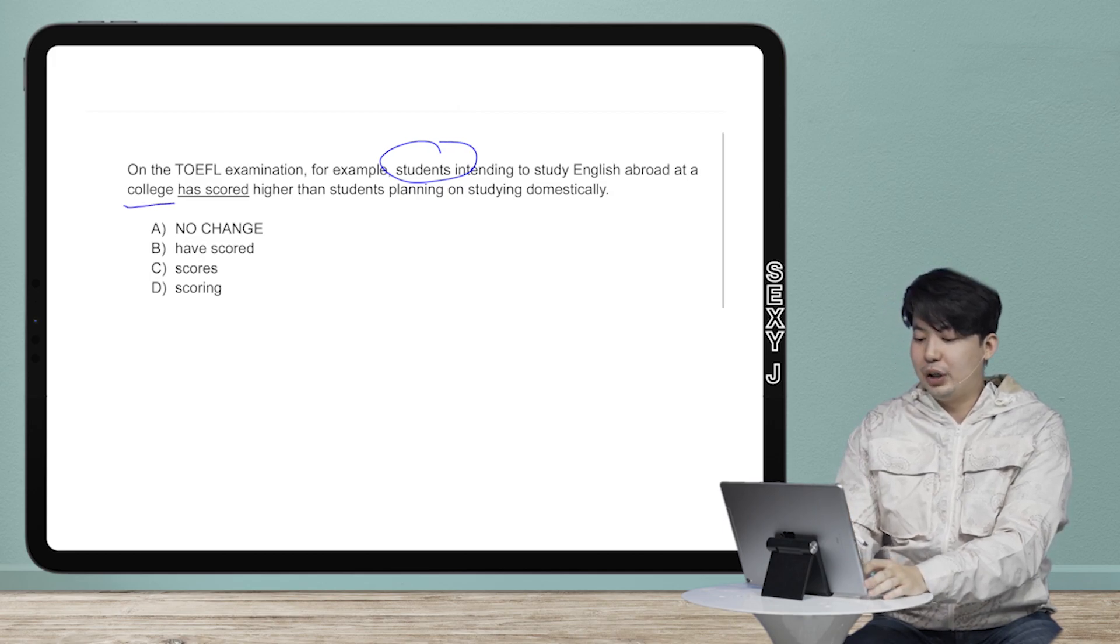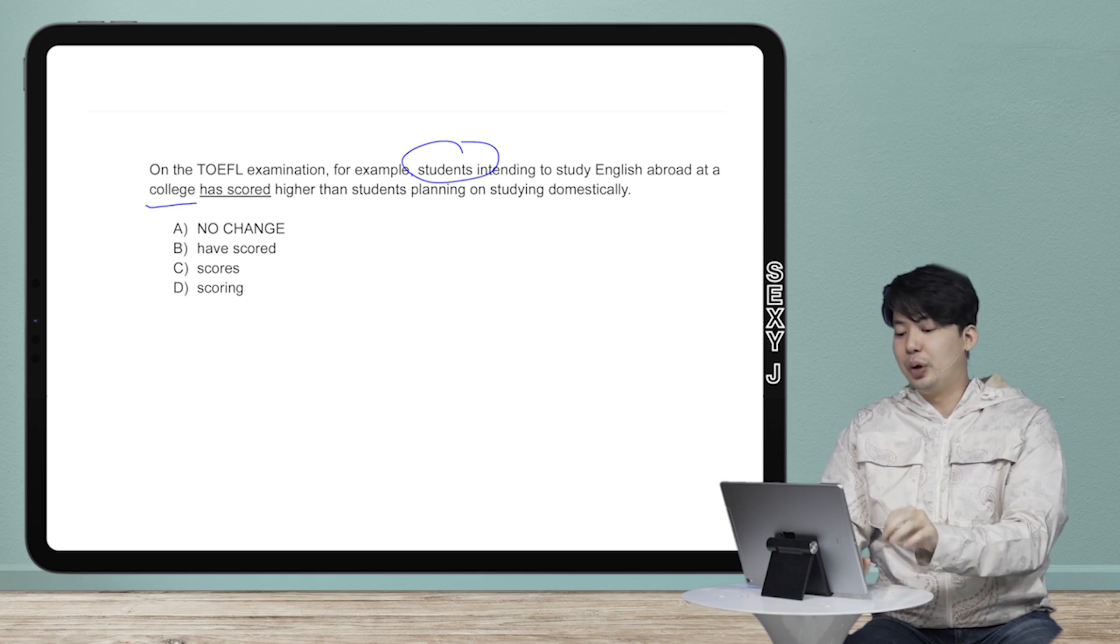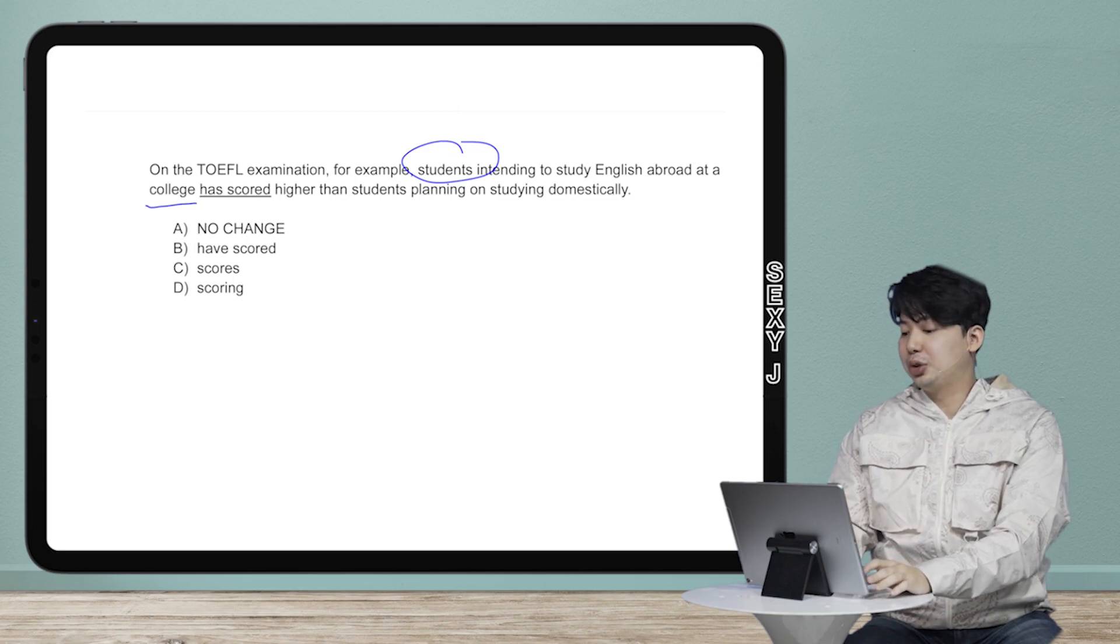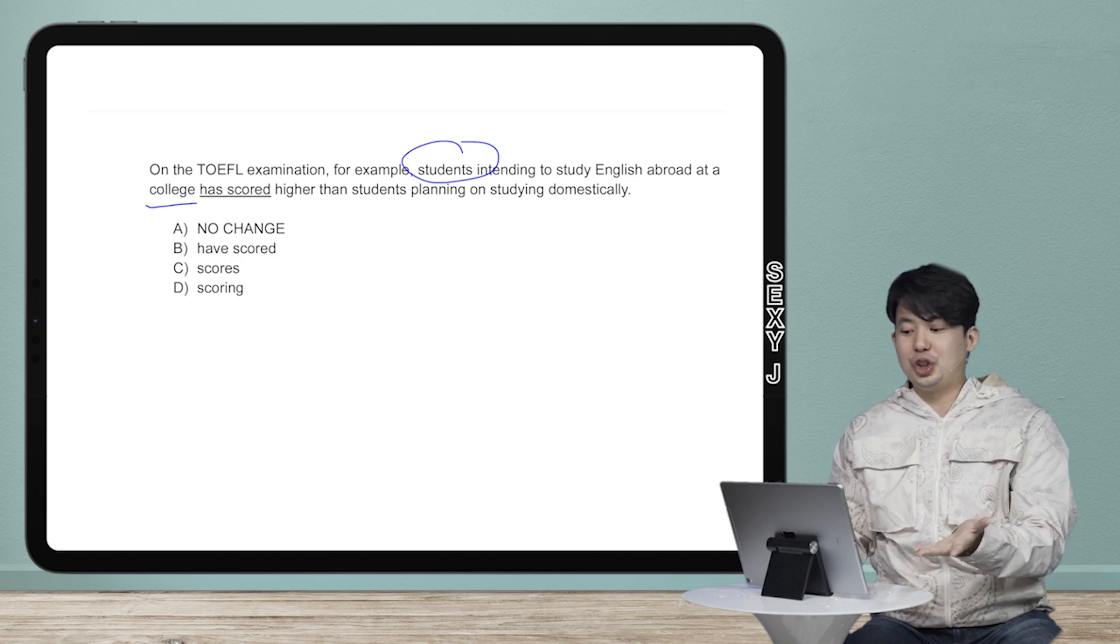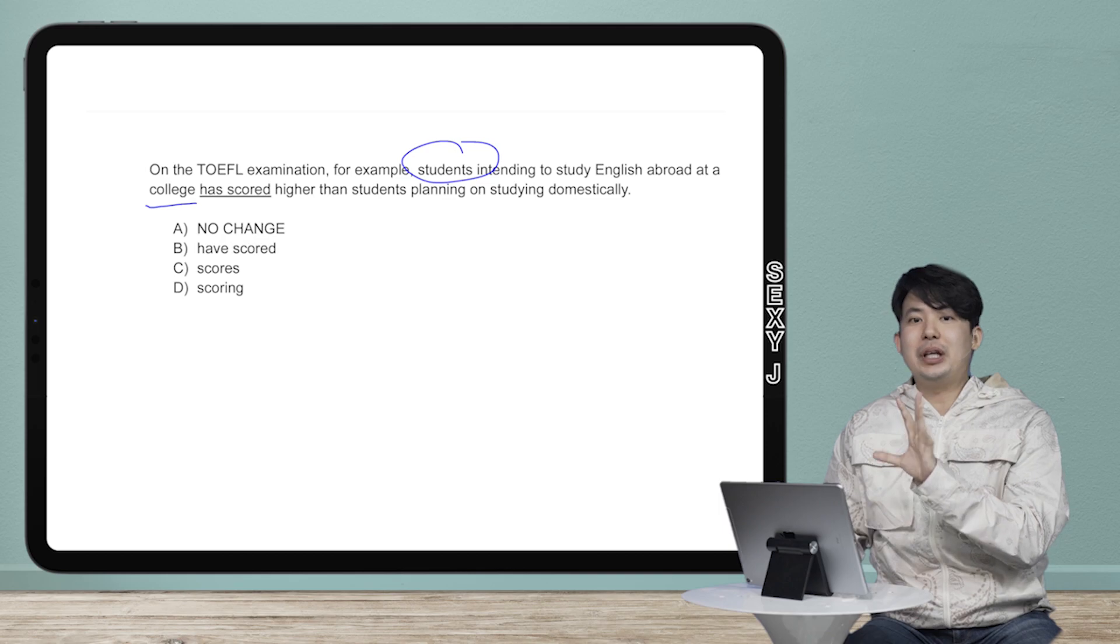And then we have the word college right in front of the verb. So if you read it quickly, which a lot of people do on these tests, if you go college has scored, that sounds okay. College has, but the actual subject was students. So can you say students has? I mean, you could talk like that. That's fine. I don't judge. But on these tests, you do students have, because that's the plural. So that's the grammar. It's not that bad.